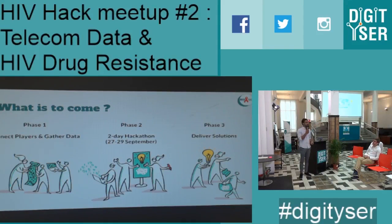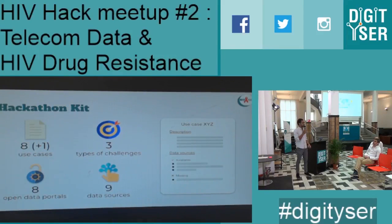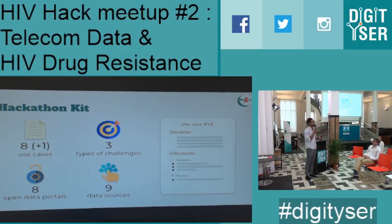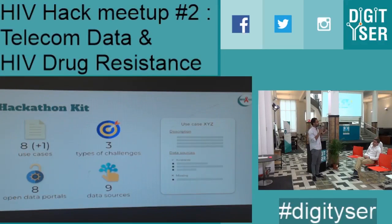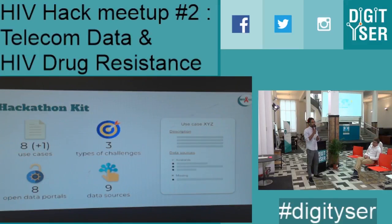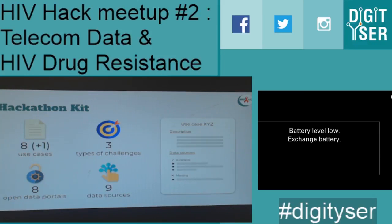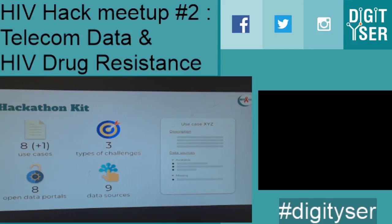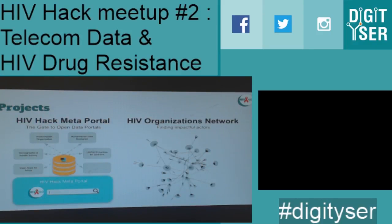You also have the hackathon kit — this is a document that regroups the use cases we defined to focus the efforts for this problem. We have eight use cases with three types of challenges: modeling, visualization, and text mining, because we want to analyze the guidelines of the countries and see if we can find information on what countries decided to implement regarding drug resistance. We have eight open data portals and nine data sources — data sources being online data available but not through an API.